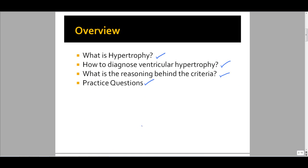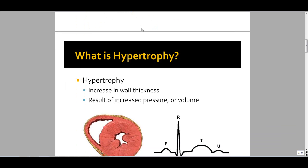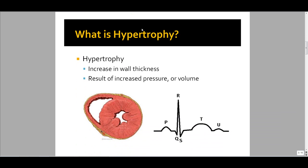Hypertrophy is any increase in the wall thickness of the heart ventricles. It can be due to increased pressure or volume from diseases like pulmonary hypertension, aortic stenosis, mitral regurgitation, and it can even be caused by infiltrative diseases like amyloidosis.